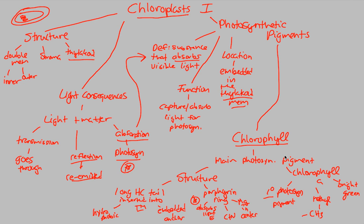Overall, chloroplasts are the organelle within a plant cell — a eukaryotic cell — where photosynthesis occurs. They have a structure very similar to the mitochondria: double membrane, stroma, and thylakoid. The thylakoid is an important part of this structure — these stacks you'll see. Absorption is the light consequence occurring in chloroplasts. Photosynthetic pigments are embedded in the thylakoid membrane; chlorophyll is the main pigment, anchored by its hydrophobic hydrocarbon tail and using its porphyrin ring to absorb light energy. Chlorophyll A is the primary photosynthetic pigment and gives plants their bright green color. In our next video, we'll continue our discussion on chloroplasts.